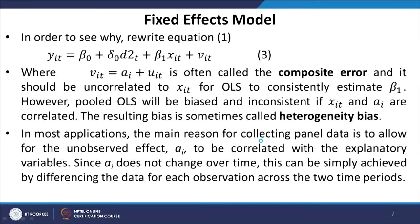To see why, we rewrite the equation as y_it = β₀ + δ₀·d2t + β₁·x_it + v_it, where v_it = a_i + u_it is called the composite error. This composite error should be uncorrelated with x_it for OLS to consistently estimate β₁. However, pooled OLS will be biased and inconsistent if x_it and a_i are correlated — the resulting bias is sometimes called heterogeneity bias.